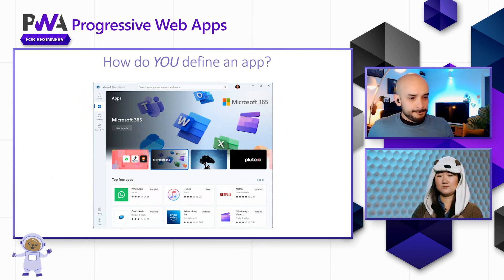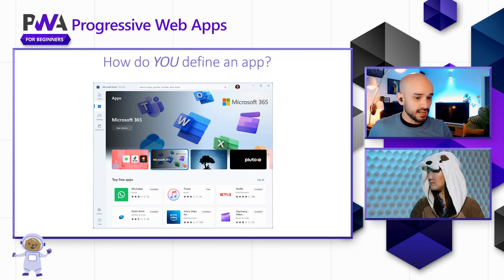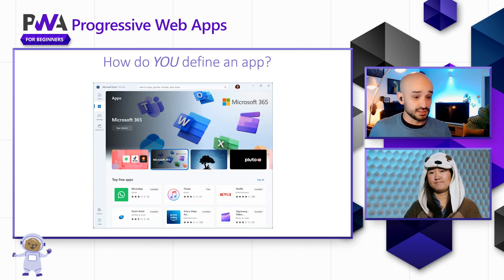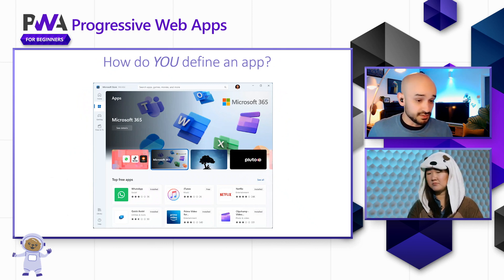With advanced integrations with PWAs into the operating system, we are going to even be able to distribute it through an application store and comply with all these characteristics — having that entry point, that icon on the device's home screen, having that entry on the start menu, and even being able to get it either from the browser or from the store.